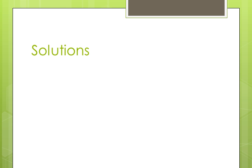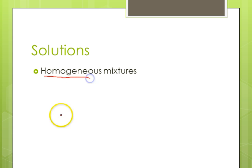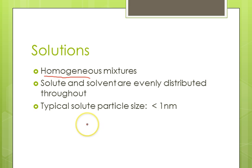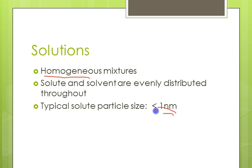Let's start by reviewing solutions. We have talked about this before, but they are homogeneous mixtures, so all the pieces — all the components — are evenly dispersed throughout the sample, the solute and the solvent. In order to get this even distribution, it requires the particles to be really quite small in radius — on the scale of a nanometer or smaller, so really quite tiny.